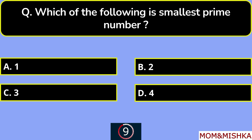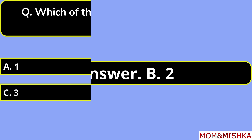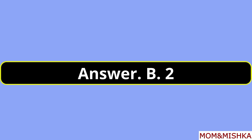Which of the following is the smallest prime number? The answer is 2. Option B.